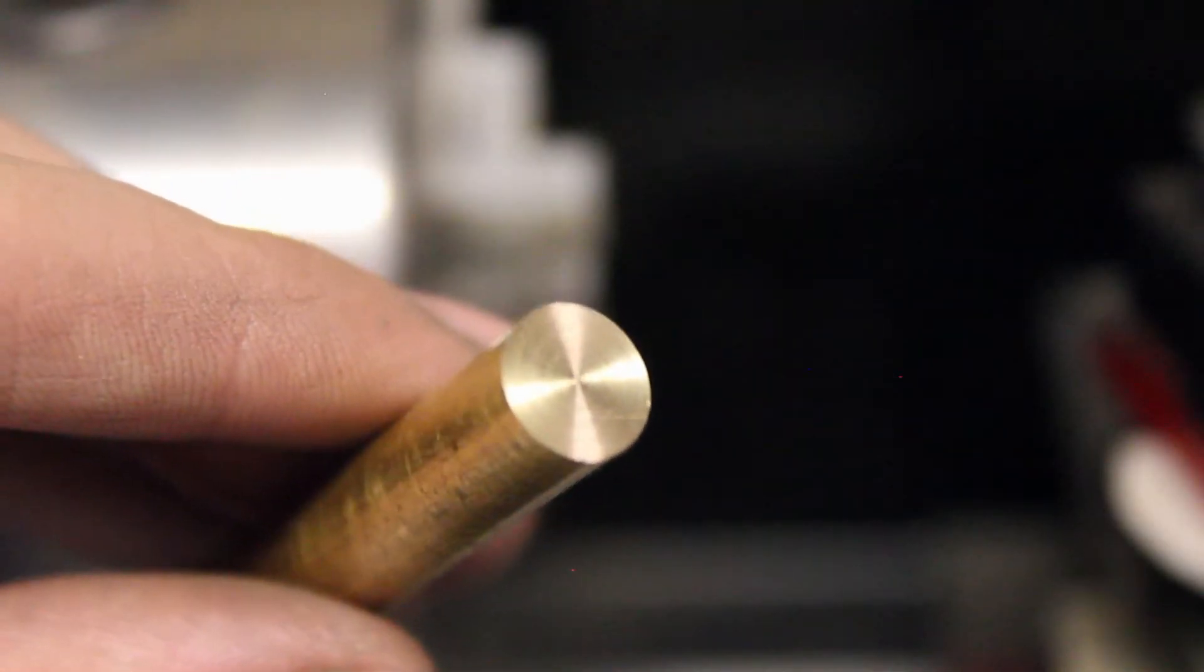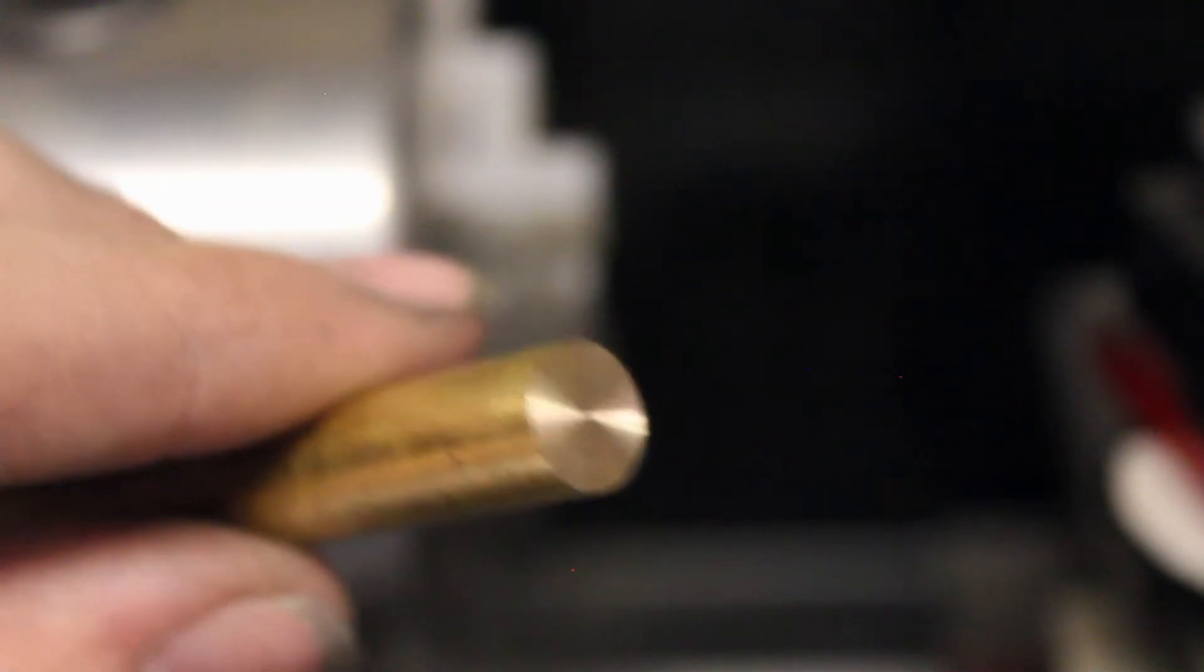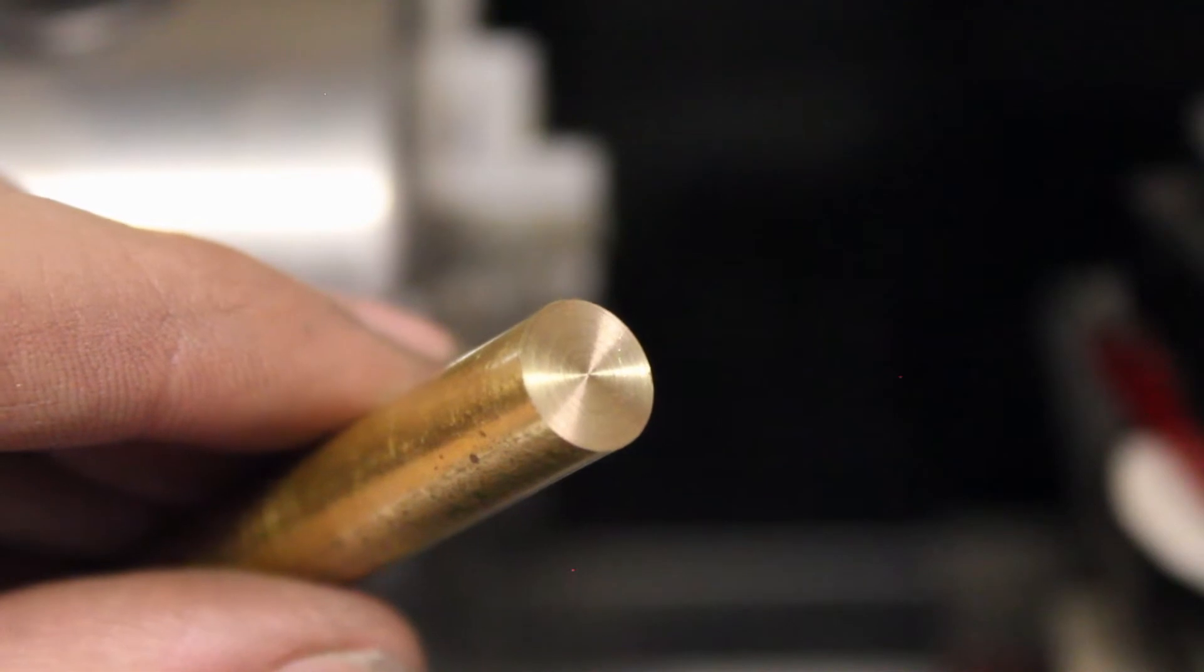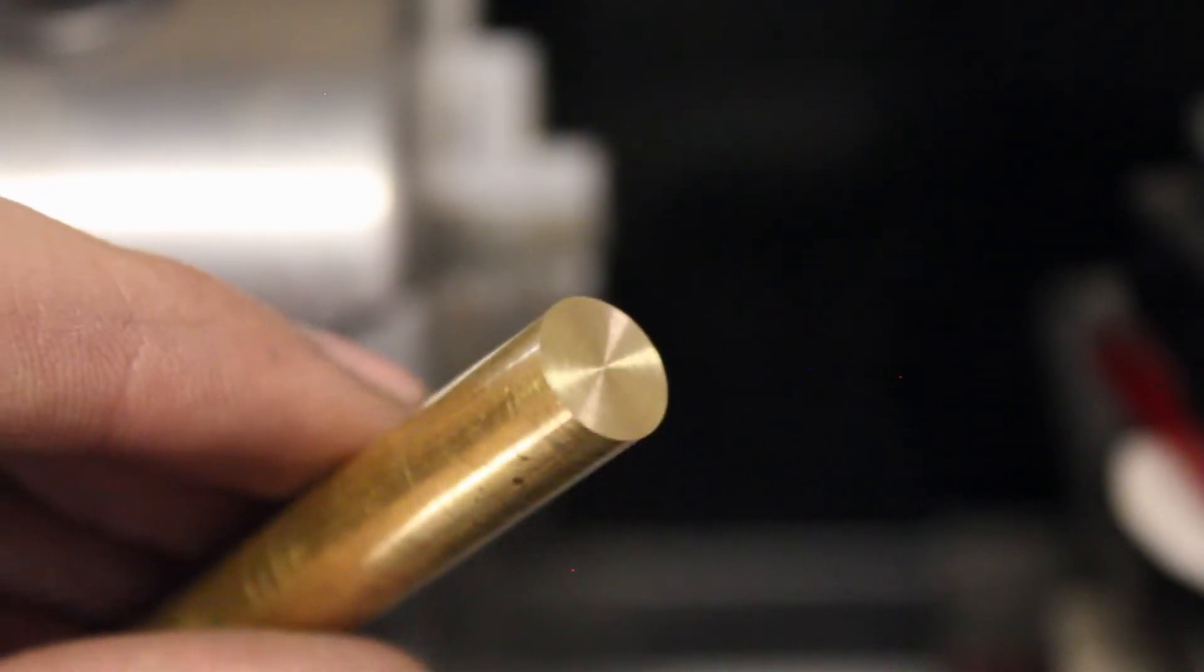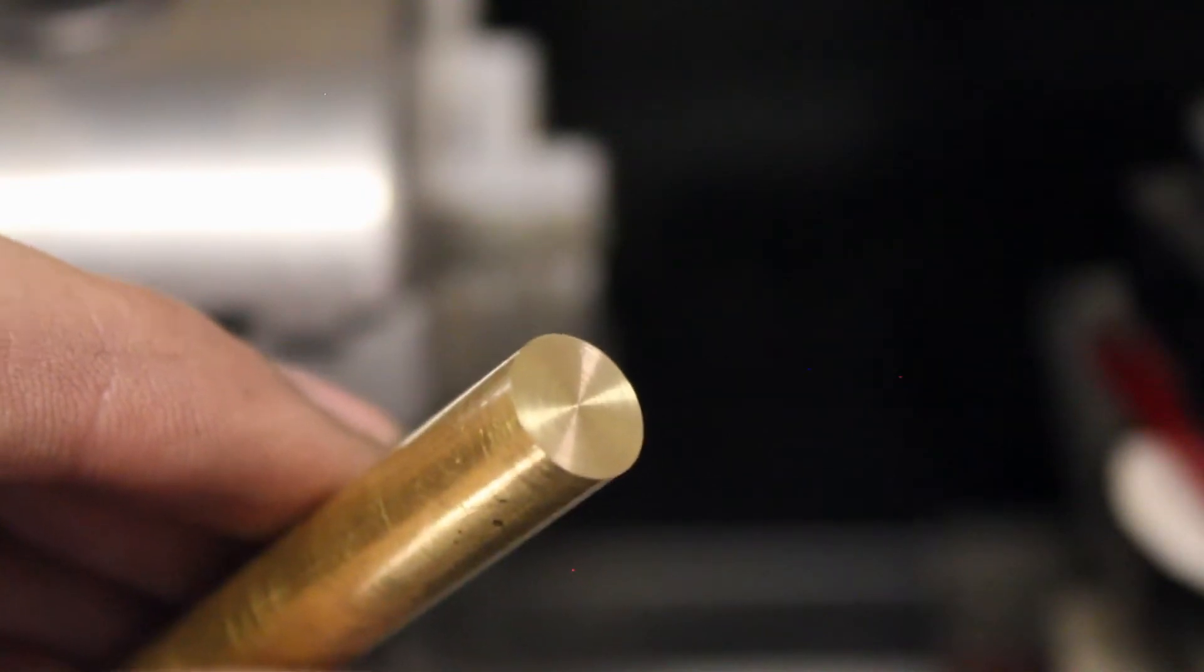After a couple of trial and error runs, I got the tool height just right, and now you can see that there is not a nub in the middle of our part. That's because the tool passes straight through the center, it doesn't go above or below.